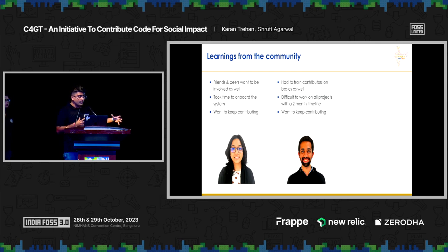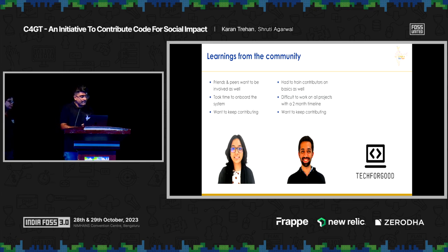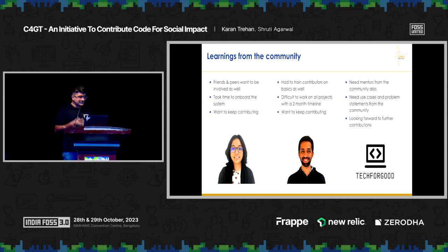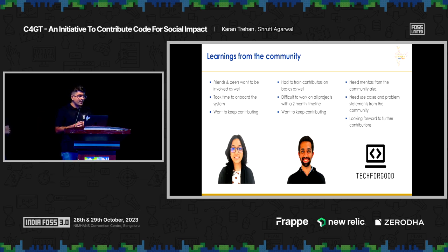For Abhishek, he had to train contributors on basics as well, which took time away from working on socially impactful work. It was difficult to complete all projects within the two-month timeline, and he too wants to keep contributing and mentoring. For Tech for Good, they need mentors from the community since their organization has limited mentoring capacity, and they need use cases and problem statements from the community that align better than their internal roadmaps.